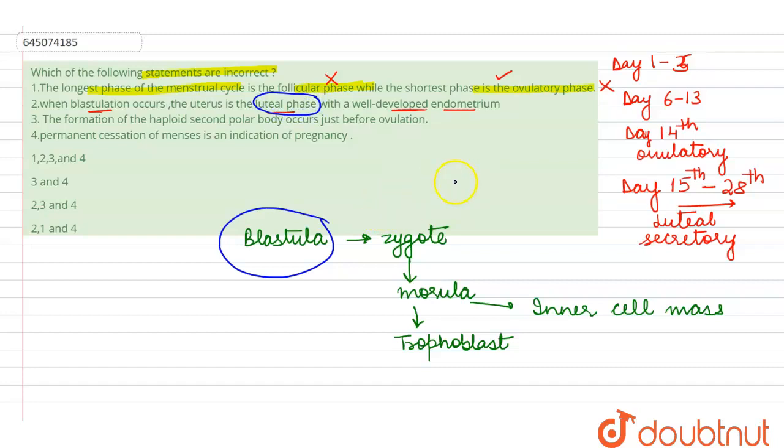During pregnancy, the menstrual cycle does not take place, so there is no point of talking about luteal phase here. No doubt the endometrium will be well developed here, but the uterus is in luteal phase—this statement is a wrong statement.